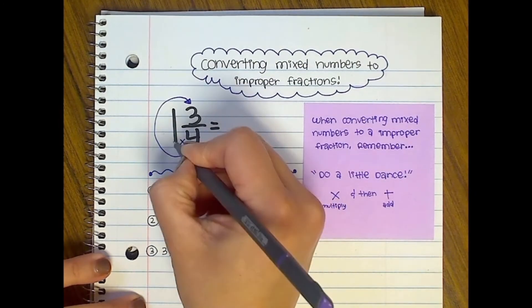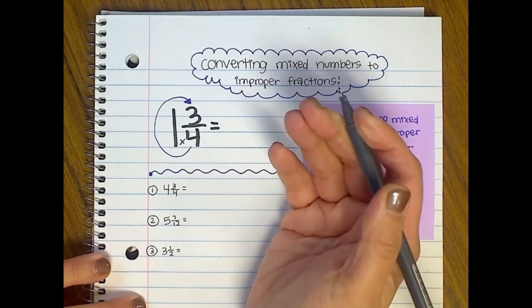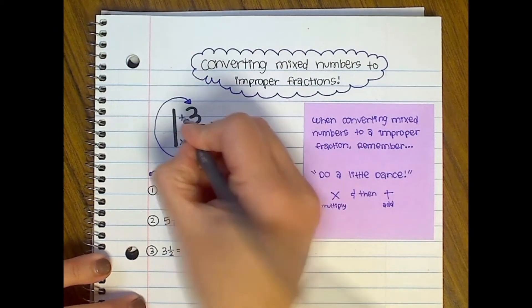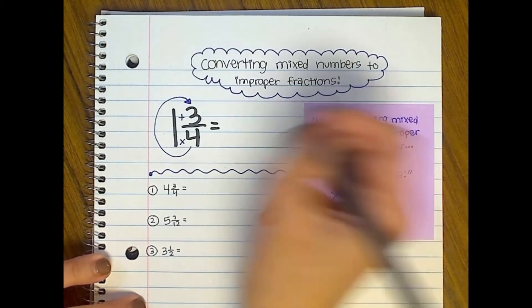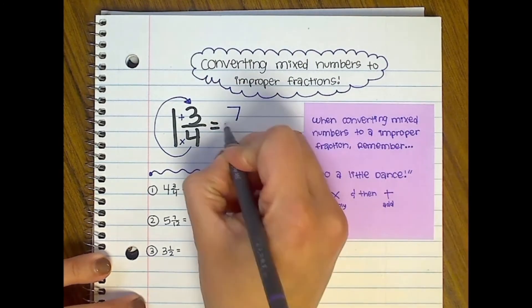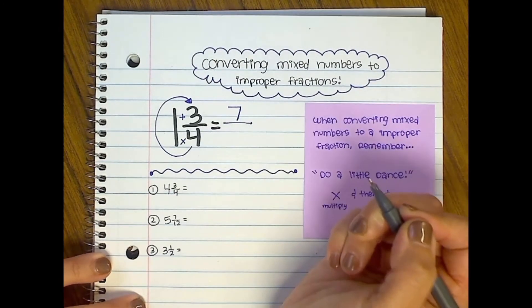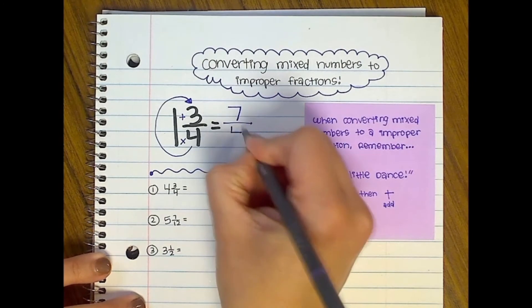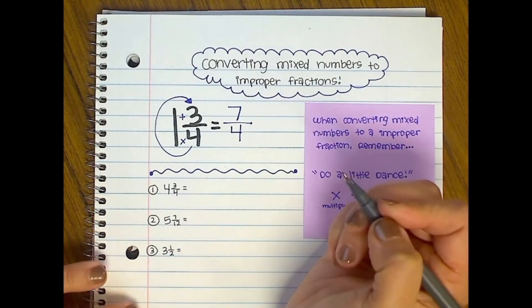So I'm going to do four times one, which is four, and then I'm going to add three, which is seven. So then you're going to put the seven on top in the numerator, and then the denominator is going to be four because the denominator always stays the same.